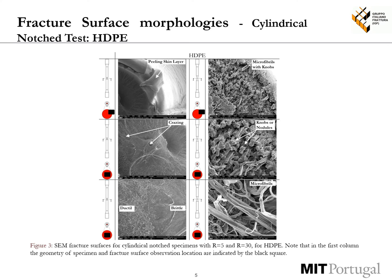Fracture surface morphologies on cylindrical notch specimens reveal that triaxiality influences the fracture morphology. At lower triaxiality, a uniform fibrillar structure over the cross-section is visible.